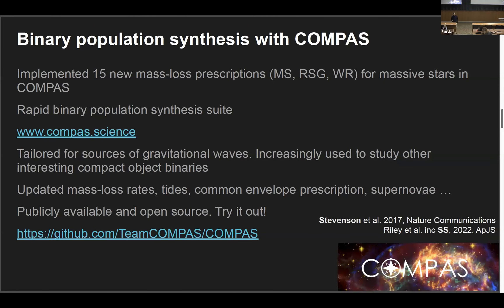We've implemented updated prescriptions for massive red supergiant mass loss, main sequence mass loss, and also new theoretical models for Wolf-Rayet star mass loss from Andrea Sander, Yorick Vink, and collaborators in our rapid binary population synthesis code COMPASS. This is a publicly available, open-source population synthesis code that we develop, mostly designed for studying gravitational wave sources, but increasingly used to study related populations — including, for example, the luminous red novae that Ursula mentioned in a previous talk.